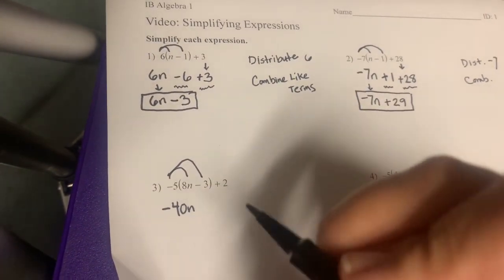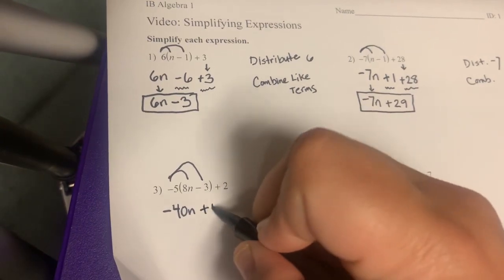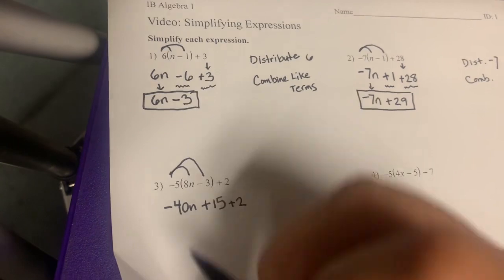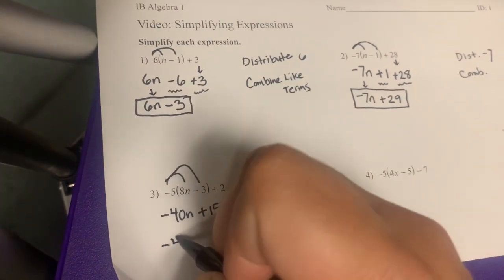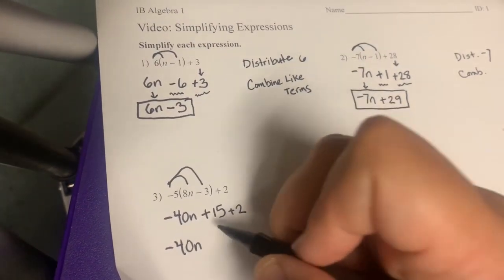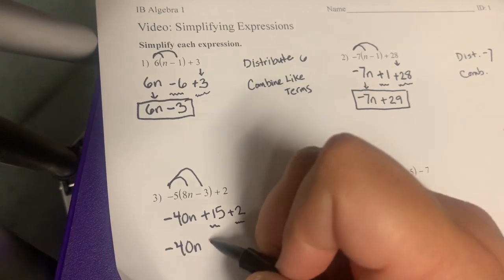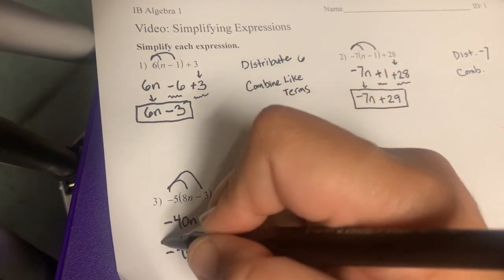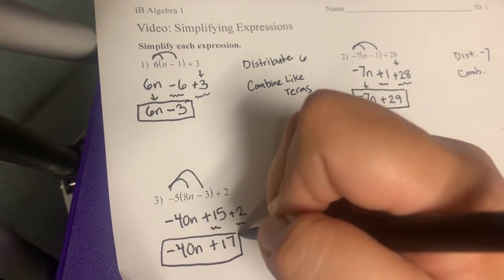...times negative 3, which is positive 15, so plus 15. And then I have a plus 2. And now we're going to combine our like terms. Bring down the negative 40n, add the 15 and the 2, and get plus 17. So our final answer is negative 40n plus 17.